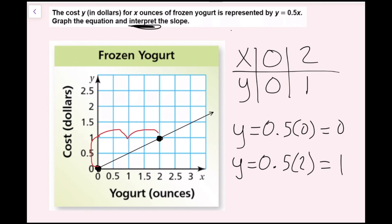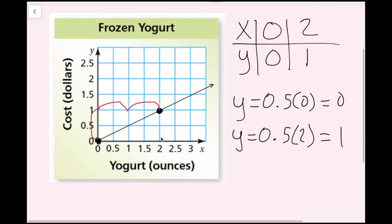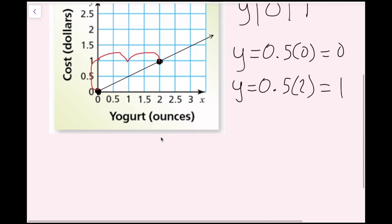As I go up one unit, I'm going right two units. So my change in y is 1 and my change in x is 2. So I know my slope is one-half. I'm going to write that down: m equals one-half.